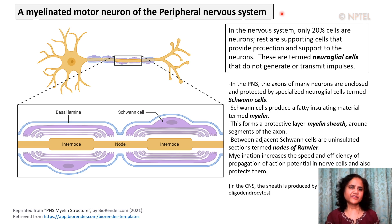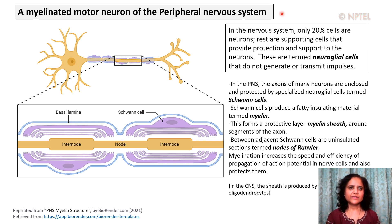Myelination increases the speed and efficiency of propagation of action potentials in nerve cells and also protects them. In the central nervous system, the sheath is also present but it is produced by cells termed oligodendrocytes instead of Schwann cells.